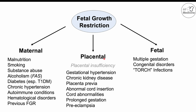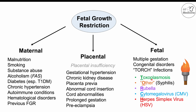In the fetal category of causes, we have multiple gestation — twins or triplets — and congenital disorders such as trisomy 13 or trisomy 18. We also have the TORCH infections, remembered by that mnemonic: T is toxoplasmosis, O is other (mainly syphilis), R is rubella, C is cytomegalovirus (CMV), and H is herpes simplex virus (HSV).